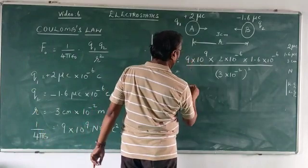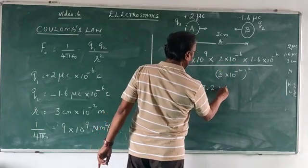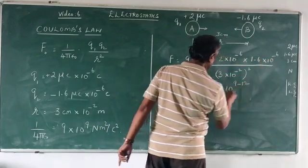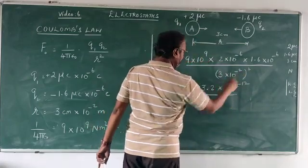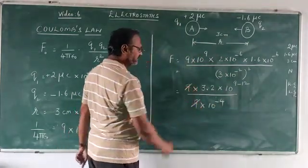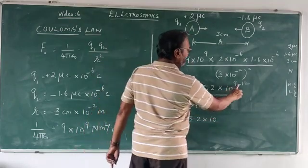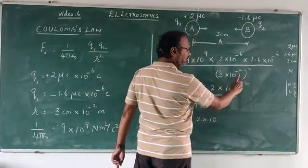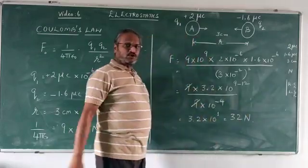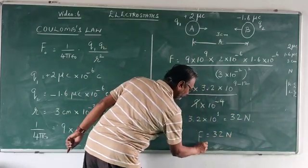Let me now do the calculation. 9 into 2 into 1.6 is 3.2 multiplied by 10 power 9 minus 6 minus 6 minus 12, so 9 minus 12, whole divided by 3, 3 threes are 9 multiplied by 10 power minus 4. This 9 and 9 gets cancelled. So I got the answer 3.2 into 10 power, 9 minus 12 minus 3 goes up plus 4, it comes to be plus 1, which is equal to 32 newton. So the force is 32 newton in air, that is 32 newton F0.